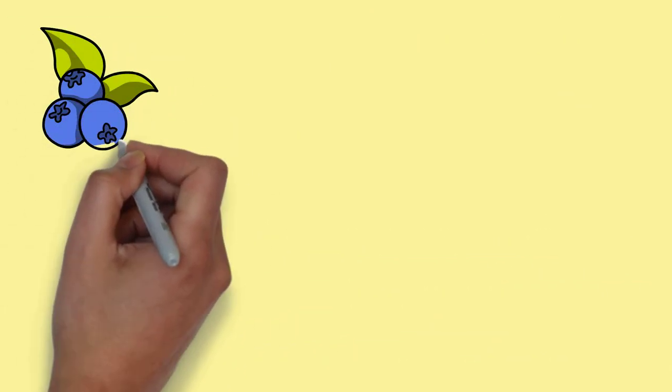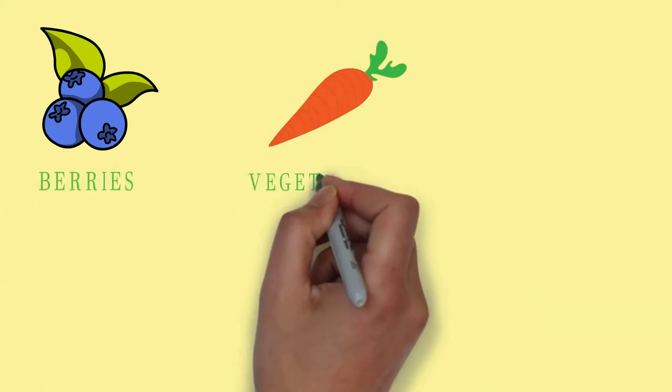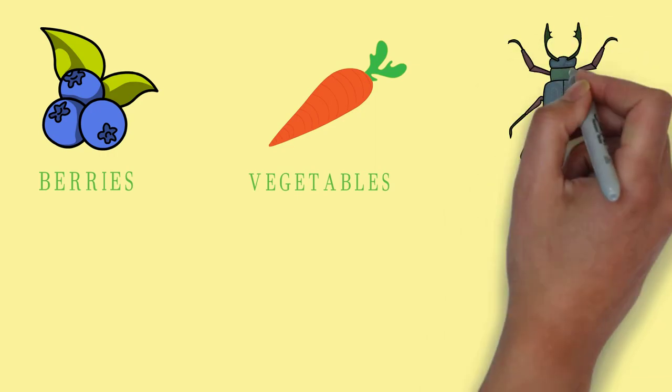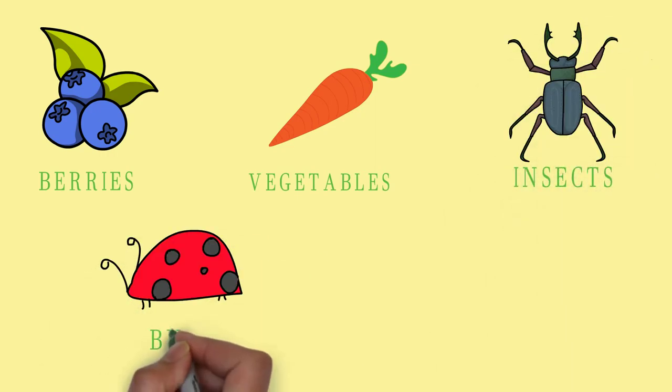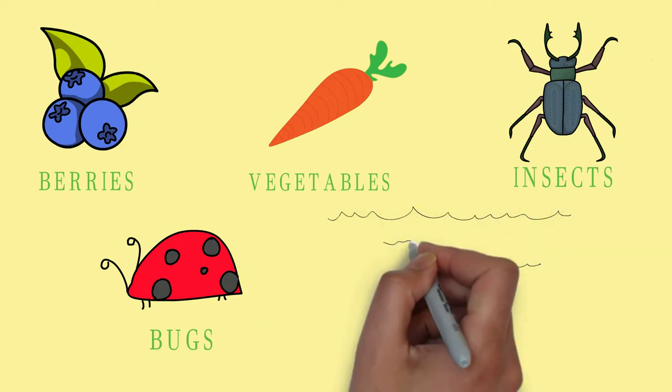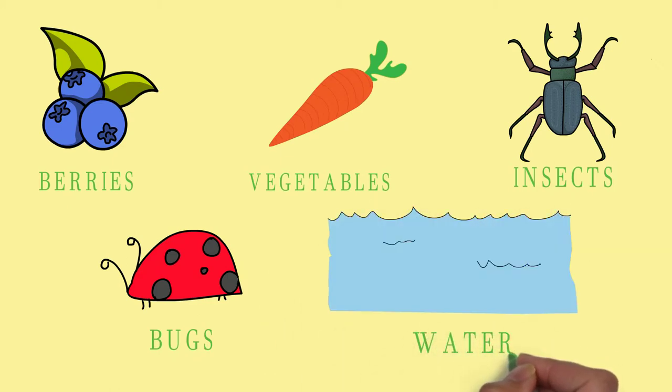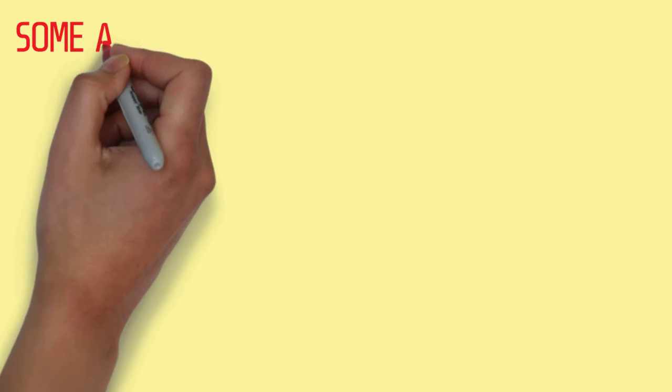But animals in the wild do not eat processed food, they don't eat any refined sugar either. They eat whatever they can find in nature like berries, vegetables, animal meat, insects, bugs, water, etc. This means that they don't need to think about dental care at all.